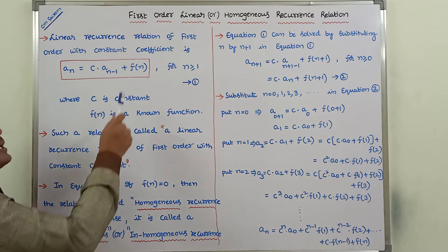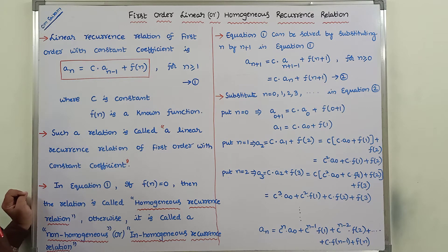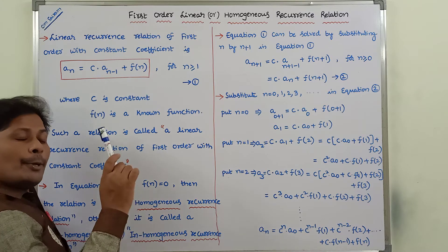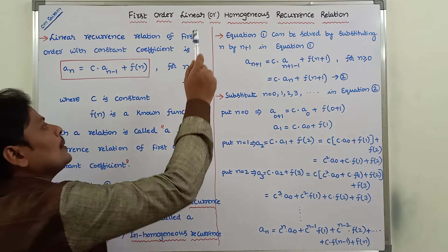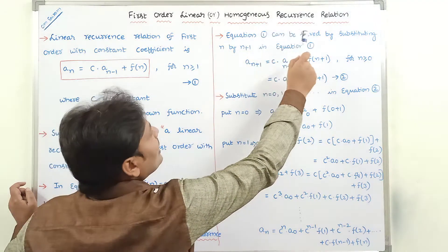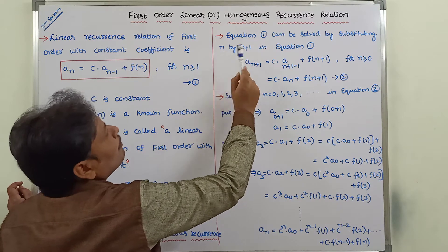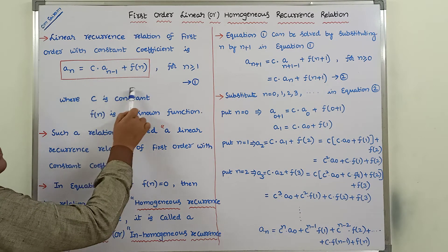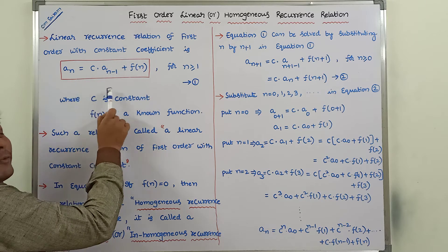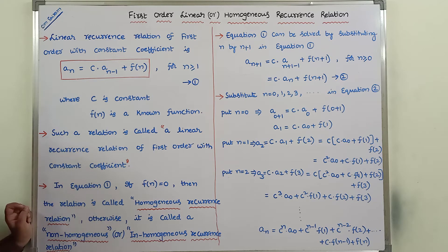Now, how do we solve this first-order homogeneous recurrence relation? We use the substitution method. Equation 1 can be solved by substituting n with n+1 in equation 1. In that equation, we substitute n+1 in place of n.